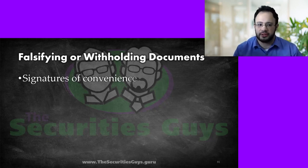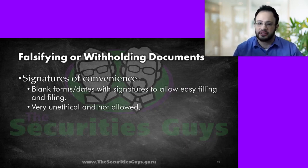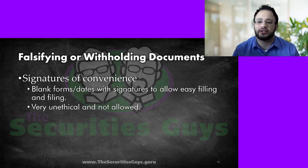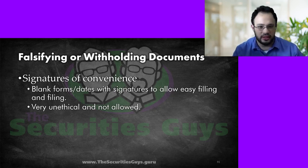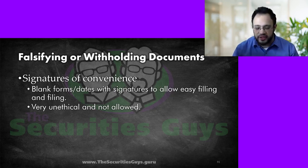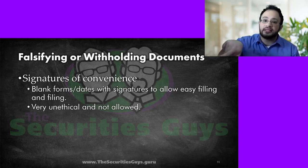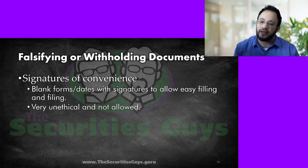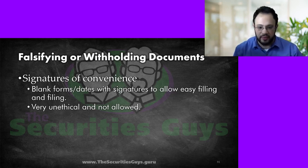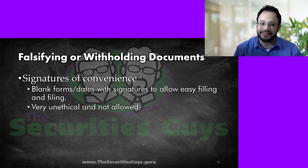Falsifying or withholding documents: signatures of convenience are basically blank forms — perhaps with blank dates but with signatures — allowing easy filling out and filing later. This is very unethical and not allowed. For example, going to a client and saying 'I understand you're having trouble with beneficiary decisions — how about you just sign here, I'll date it later, and email me who you want me to put in here and I'll fill it out.' No — nothing can be blank-signed. If there's a signature, the form must have been filled out first. Generally, the signature is the last thing that's done.